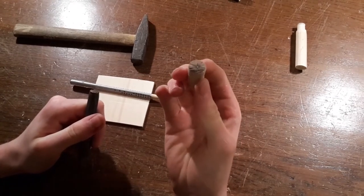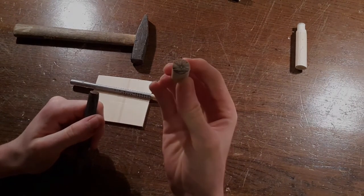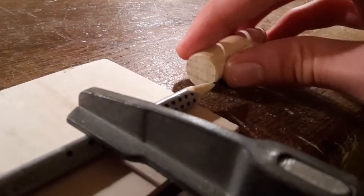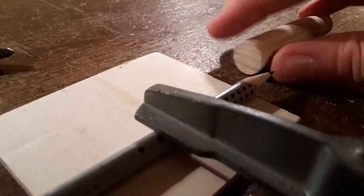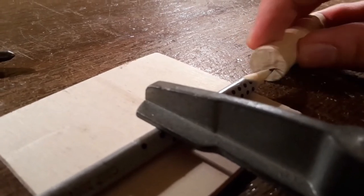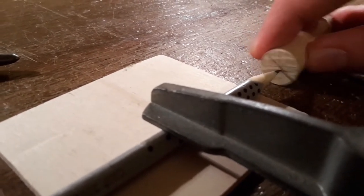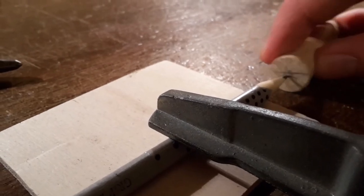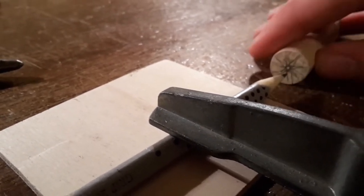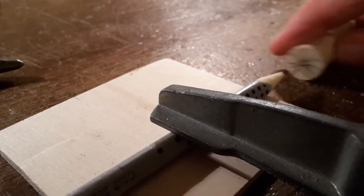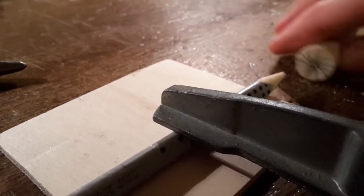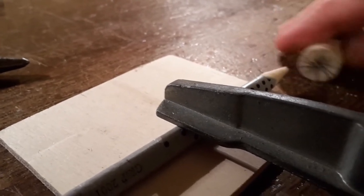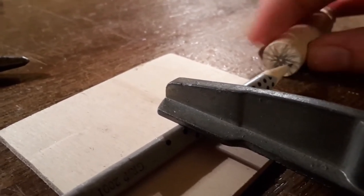And now you've got the exact center of your dowel marked and ready for drilling. Alright, so here's a close-up of this process. I just clamped the pencil down with a clamp, and then just run your wooden dowel over the tip of the pencil, and continue doing that until you see that this little center point is starting to show.